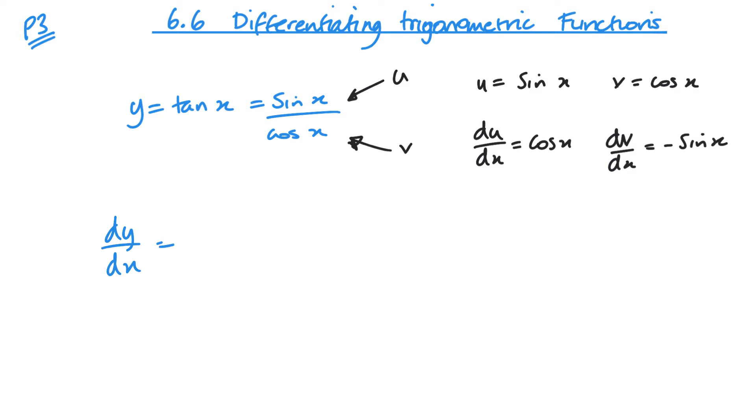Now remember this is v du by dx. So cos x times cos x, so cos squared x minus u times dv by dx. So that's going to be minus sine squared x. And that's all over v squared, so that is cos squared x. Now if I think of the top, I've got now cos squared x plus sine squared x over cos squared x. And if you remember, sine squared plus cos squared will just equal 1. So this top line here is just going to be the value 1.